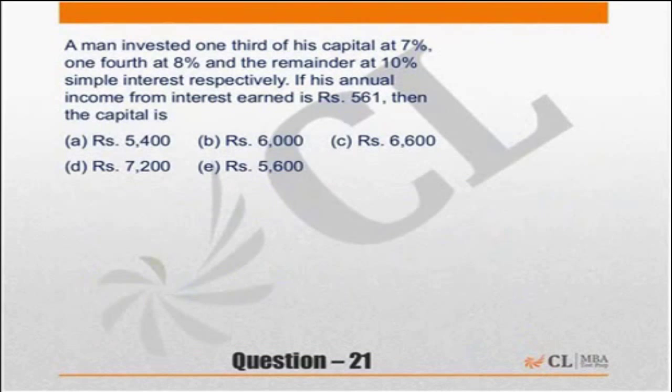Question 21. A man invested one-third of his capital at 7%, one-fourth at 8% and the remainder at 10% simple interest respectively. If his annual income from the interest earned is Rs. 561, what is the capital?